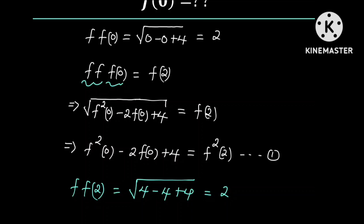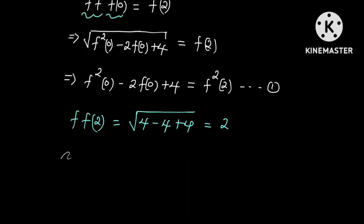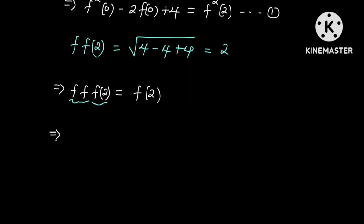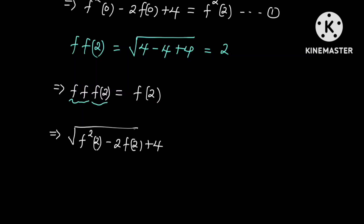Taking f on both sides, from the left hand side we need to substitute f of 2 into the function f of f. So this implies that the square root of f squared of 2 minus 2 times f of 2 plus 4 is equal to f of 2.